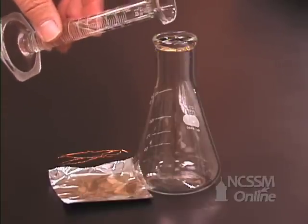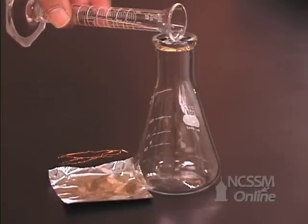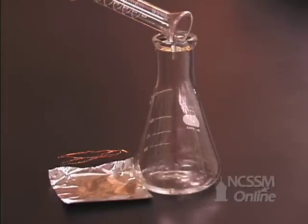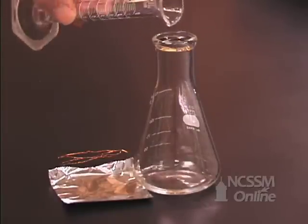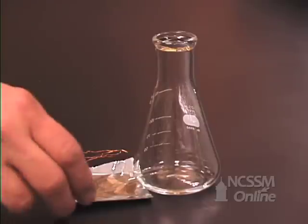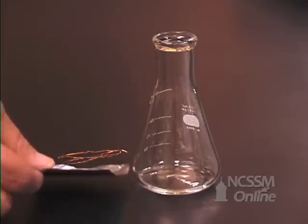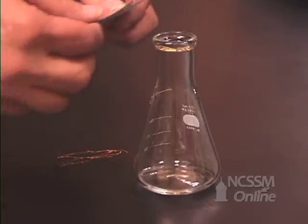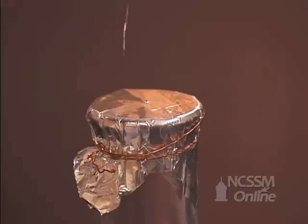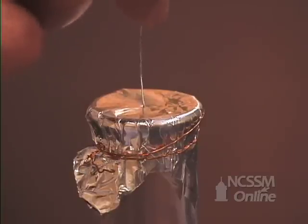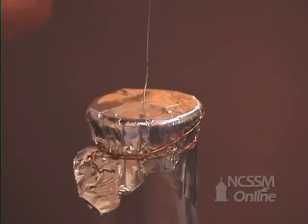We will then add approximately 5 milliliters of the unknown liquid. We will cover the mouth of the flask with the aluminum foil. We will use the copper wire to hold the aluminum foil in place. We will place a small pinhole in the top of the aluminum foil.